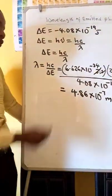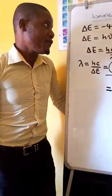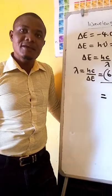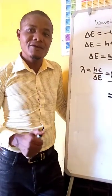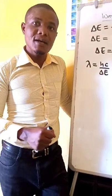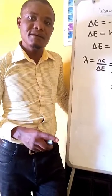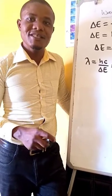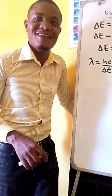So this is how we calculate the wavelength of the emitted photon. In the next tutorial we look at the quantum numbers and also the quantum mechanical model of the atom. Thank you.